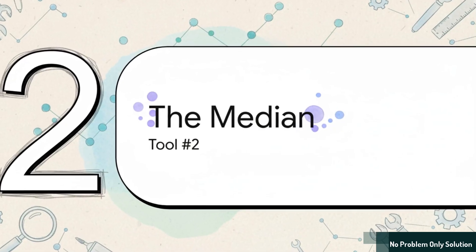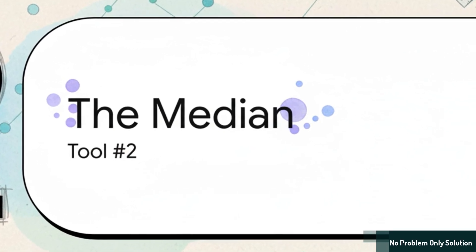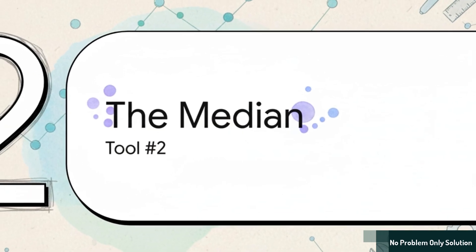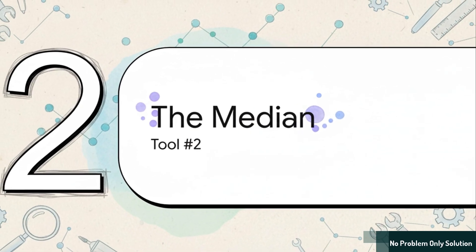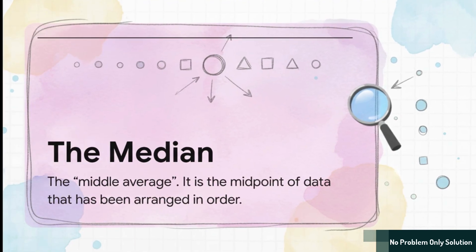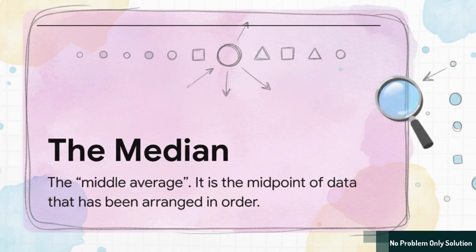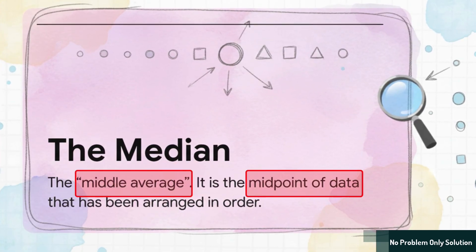Alright, time to reach back into our toolkit. The Mean was great. But what if we don't want a calculated average? What if we want to find the score that's literally in the dead center of the group? For that, we need our second tool. The Median. Yeah. The Median's nickname is the Middle Average. And it's a perfect name, because it's all about one thing. Location, location, location. It's the one number that slices the data right down the middle.